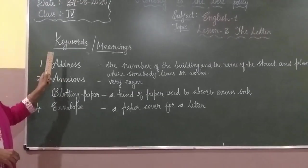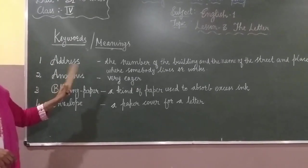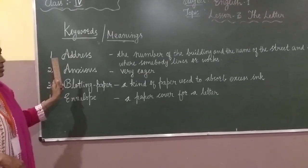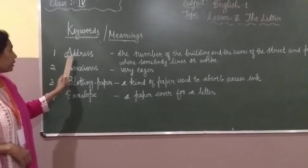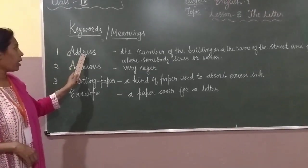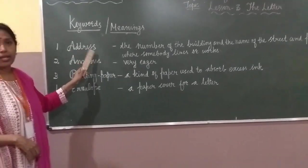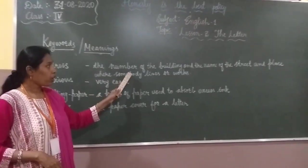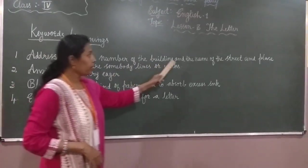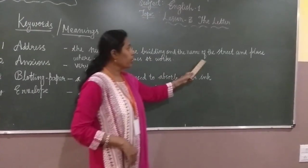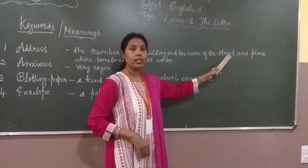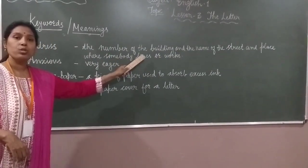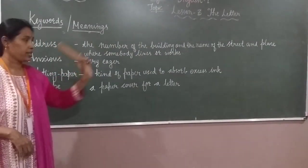Children, now look at the keywords and explain yourself. First one: address. Address means the number of the building and the name of the street and place where somebody lives or works.